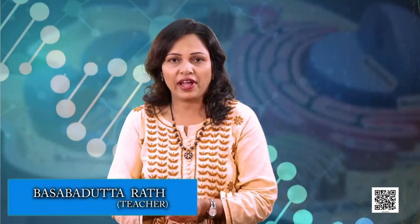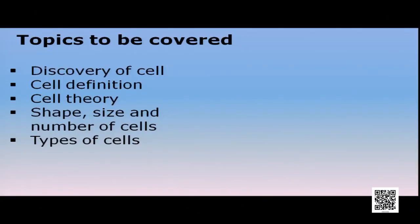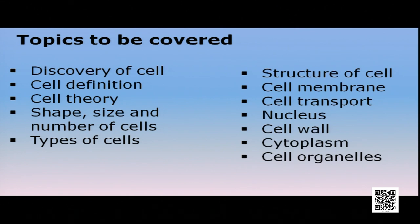Hello and welcome to today's class. Today we are going to read this chapter 'Fundamental Unit of Life.' I am Basavdar Tarath and this is chapter 5 of your class 9 science book. Today we are going to cover the first half of this chapter. We will learn about discovery of cell, definition of cell, cell theory, shape, size and number of cells, types of cells, structure of cell, cell membrane, nucleus, cell wall, cytoplasm, all the cell organelles, and cell transport. Let's start this lesson with a short story.